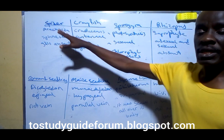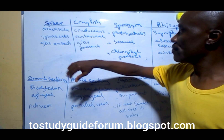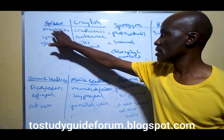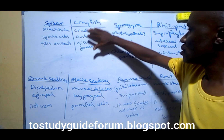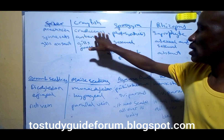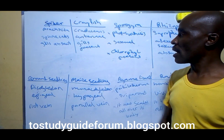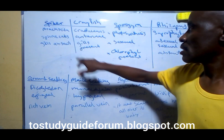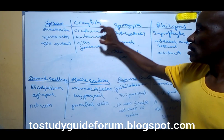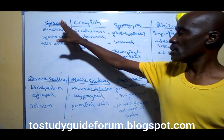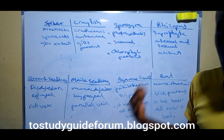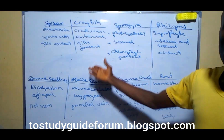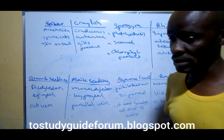Let's start from the spider and crayfish. The spider belongs to the phylum we call Arachnida, while the crayfish is from Crustacea. The spider has what we call the spinnerets, while this one has antennae. In the spider there are no gills, while in the crayfish they have gills because they are aquatic.